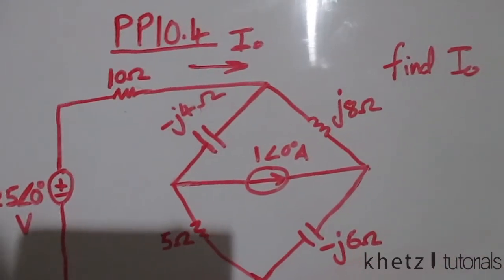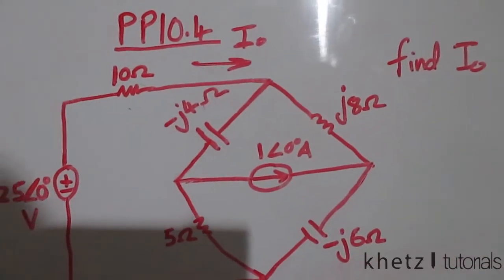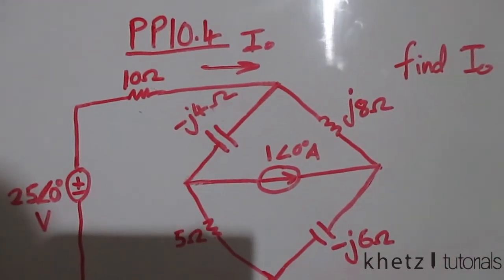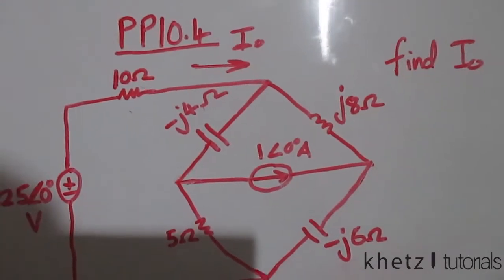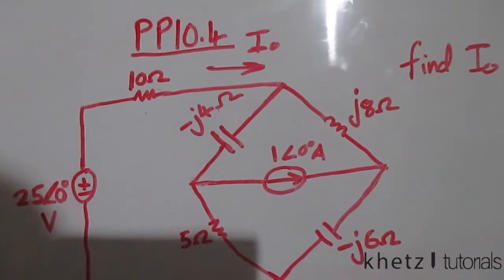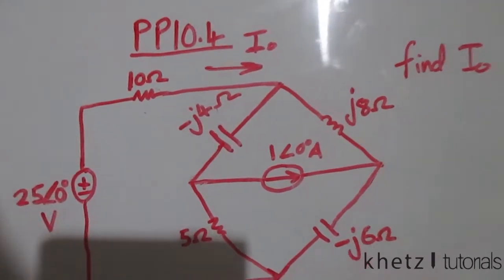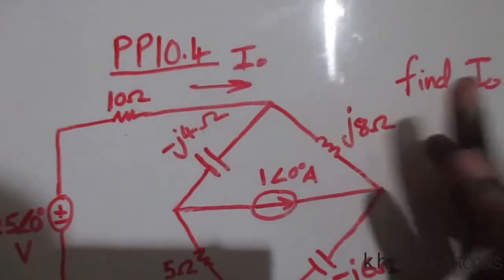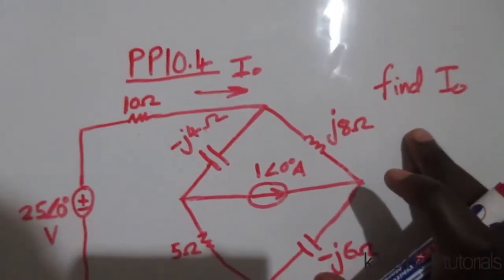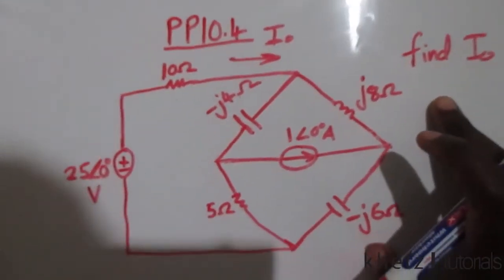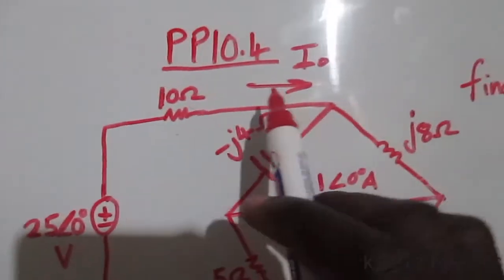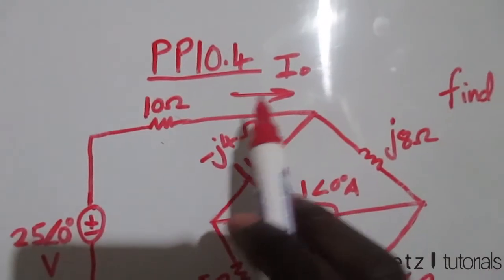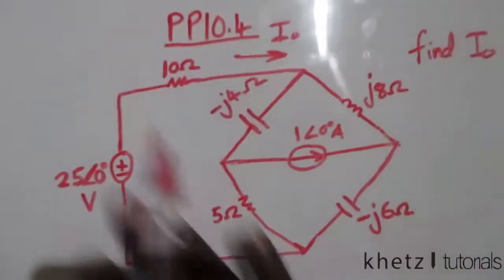Welcome to CAT's Tutorials. In this video I'll be covering practice problem 10.4. Please subscribe to my channel and give this video a thumbs up if you like it. We are asked to find IO, which is indicated in the given circuit.